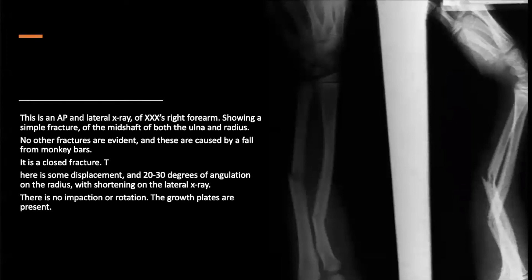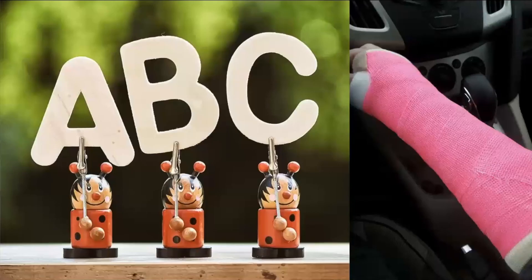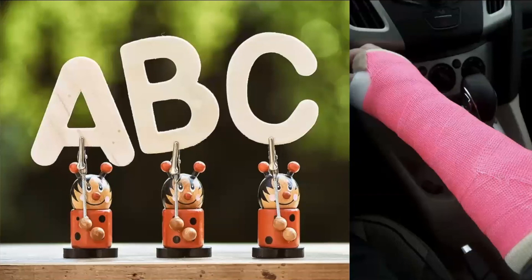Again, to give you an idea of the flavour: an AP and lateral x-ray of the right forearm shows a simple fracture of the mid-shaft of both the ulna and the radius. There are no other fractures evident, and it's a closed fracture. There's some displacement, some angulation of 20 to 30 degrees with some shortening on the lateral x-ray. No obvious impaction or rotation, and the growth plates are present. That's very long, but it gives you the flavour. Just thinking about your ABCs and some of the common words from Plaster of Paris — those more technical terms that our orthopaedic colleagues are probably more familiar with.